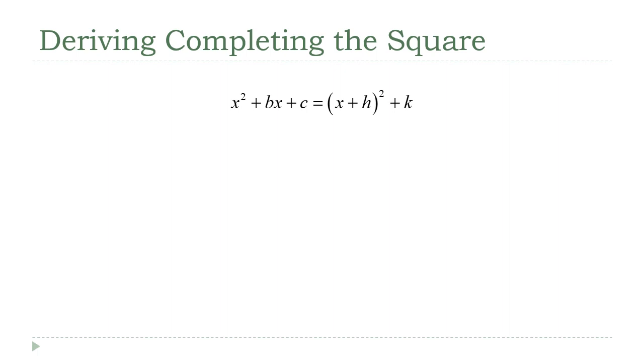My first step is going to be to take that right-hand side and multiply it out. So if I do that, it becomes x squared plus 2hx plus h squared plus k. That k really isn't going to be a factor here; it's just going to kind of float along for this whole derivation.